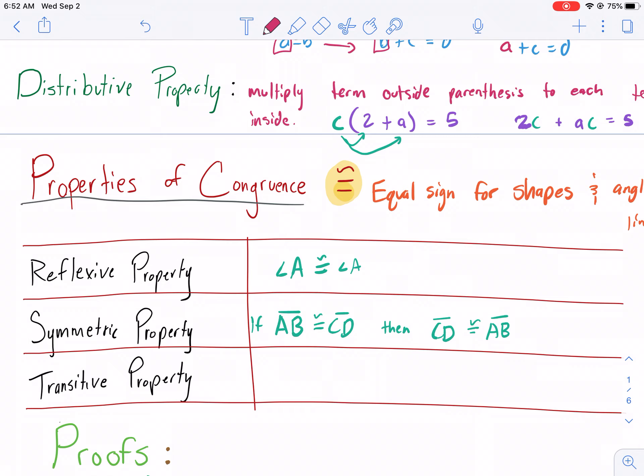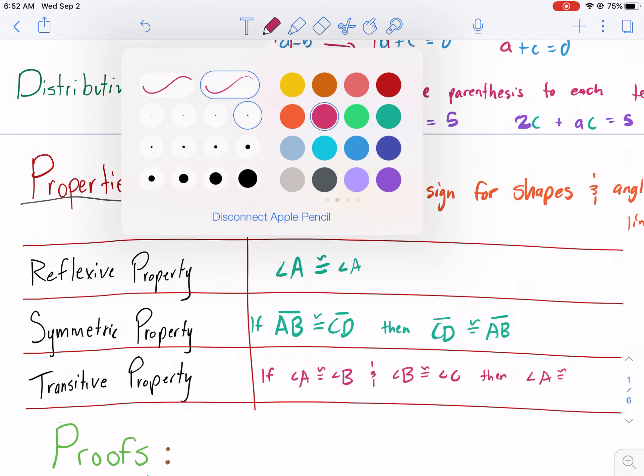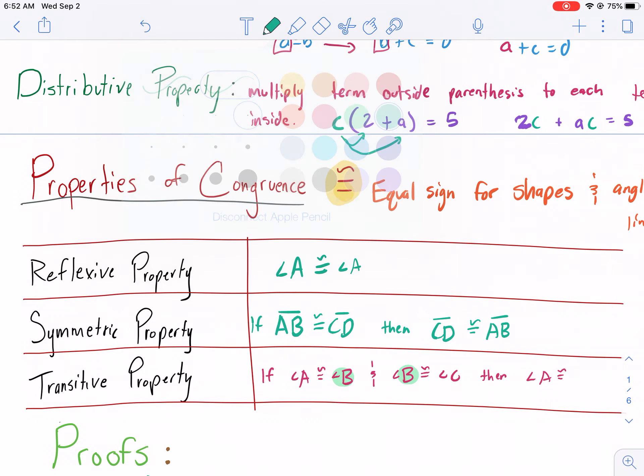Transitive is really kind of the moneymaker here. This is the one you use a lot for certain proofs. So if angle A is congruent to angle B, and angle B is congruent to angle C, then angle A is congruent to angle C. Notice how we have a B here on both sides. We can bridge the gap between, we can bridge the gap, and we can say angle A is congruent to angle C.